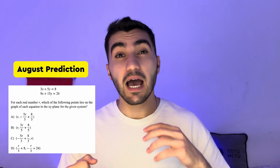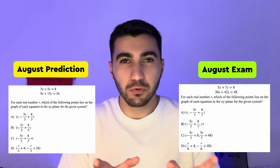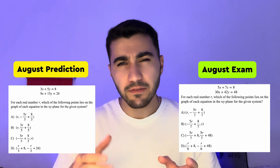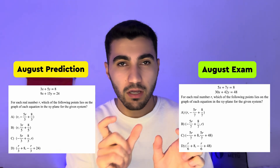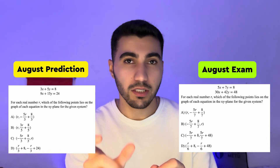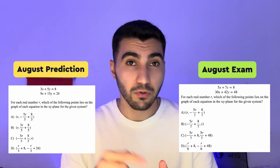So let's check these questions one by one. I've already solved the August predictions questions in the predictions video, but I will go over the August questions that were on the exam and see the similarities between them. Here is the question that I predicted and here is the question that actually showed up on the exam. Look at the similarities — these are literally the same questions with only different numbers. You might have seen this question on the August exam depending on which version you got, so let me know in the comments.